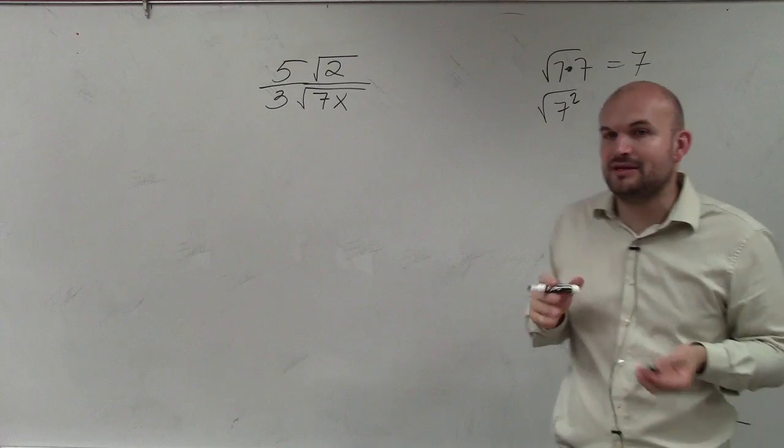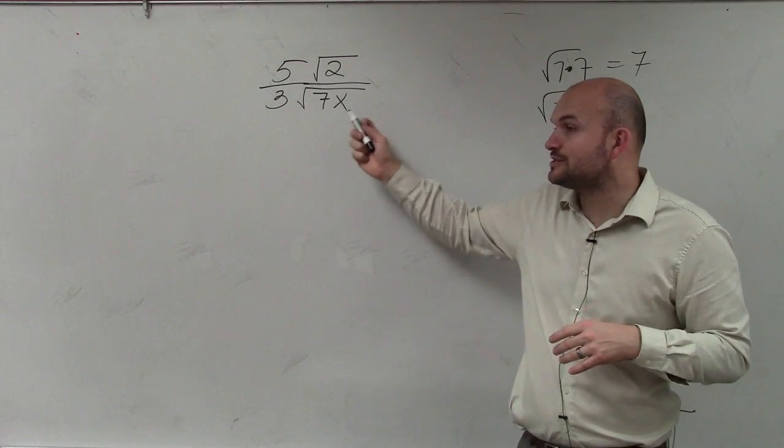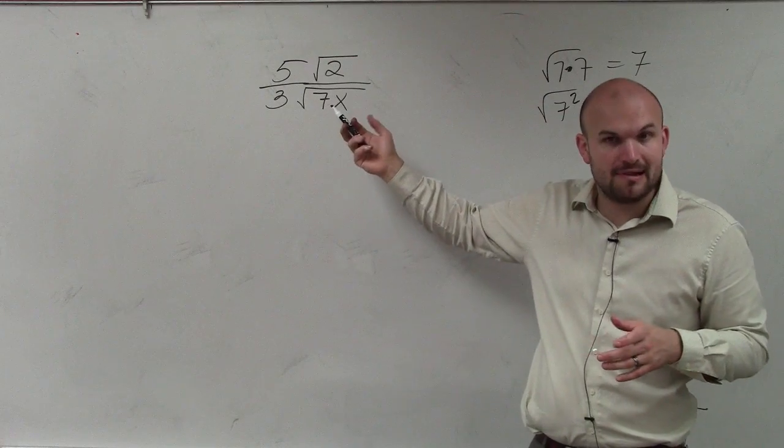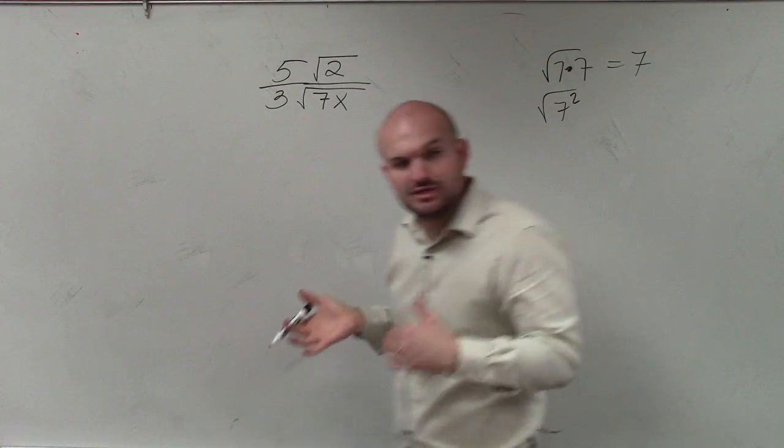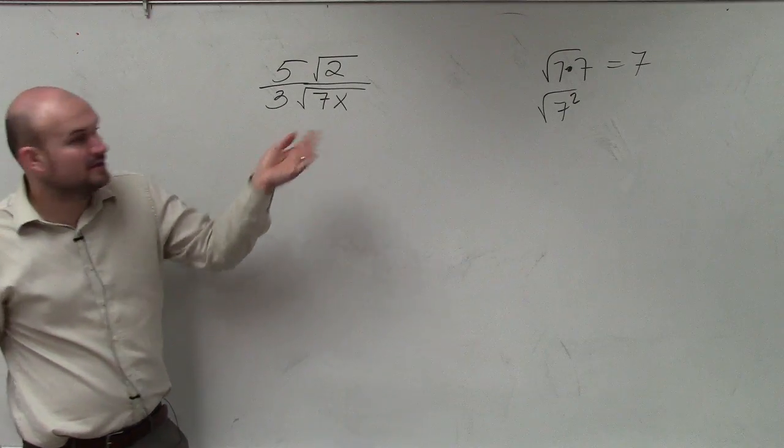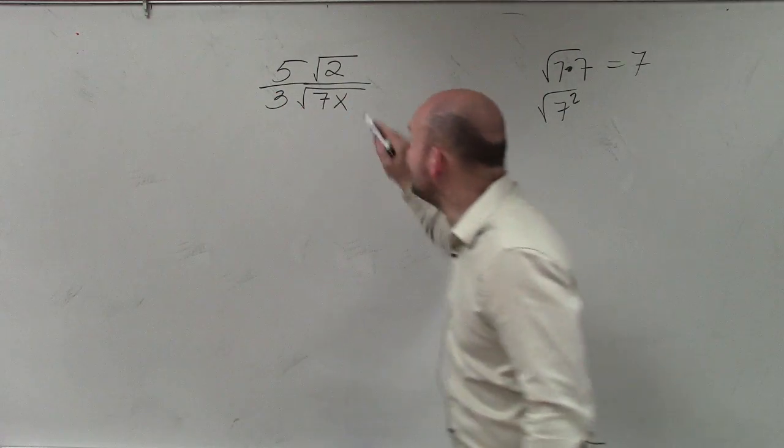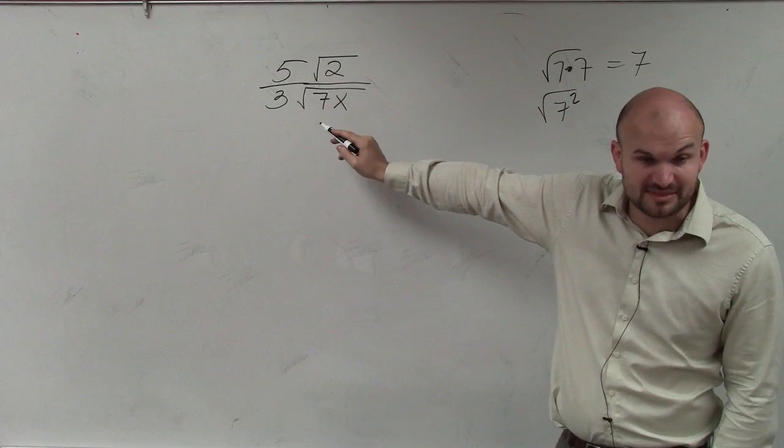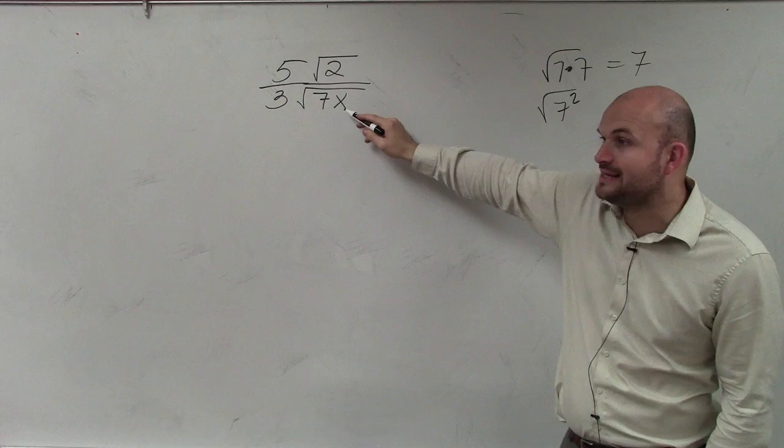So basically, what I'm trying to make you guys understand is, if you can't divide and you can't take the square root to simplify this, what you're going to want to do is multiply it by a term that you can take the square root of. So if I want to take the square root of this term, I need this to be 7 times 7, right?